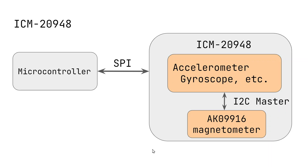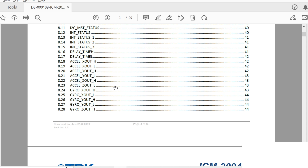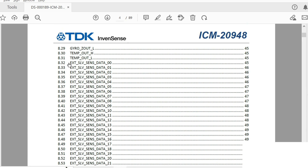Let me explain this using this simpler block diagram. So using SPI or I2C protocol, we can access the accelerometer, gyroscope, and other data of the IMU sensor, but the magnetometer is not fully integrated to the sensor. Instead, we have this I2C master that establishes communication between the magnetometer and the IMU sensor. So what we have to do is configure and enable this I2C master. Once we configure the I2C master, the data will be stored within these registers.